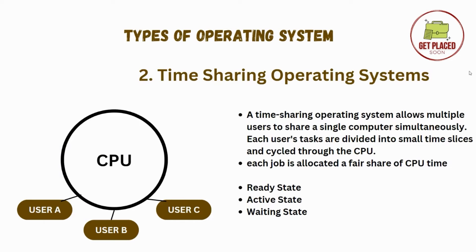Moving ahead, we have time sharing operating system. A time sharing operating system allows multiple users to share a single computer simultaneously. In this picture, you can see there is one CPU — one computer — and there are three users. Simultaneously, all the users can use this computer. So every single user or every single job is allocated a fair share of CPU time.